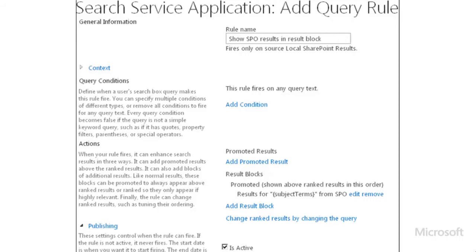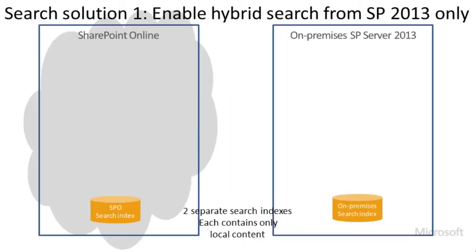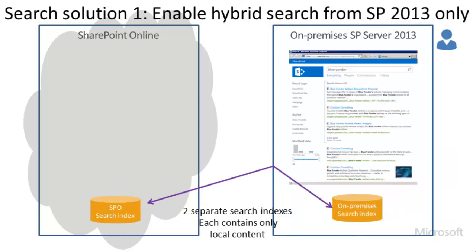Now let's take a look at a high level at how each hybrid SharePoint search solution will work. In Hybrid SharePoint Search Solution 1, when a user types a query in a search box in the SharePoint Server 2013 deployment, the query is sent to the local search index and to the remote SharePoint Online search index, and the search returns results from both indexes so that the user can view the results in the SharePoint Server 2013 deployment. We can choose to show the results that are from the remote index in a single block at the top of the search results page and show local results below that.